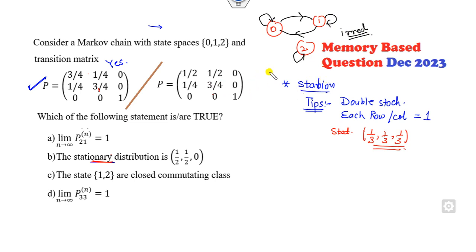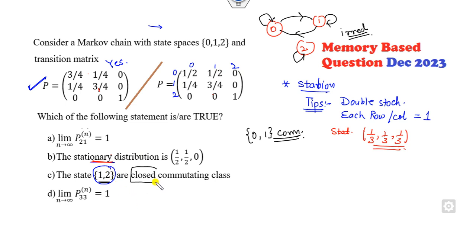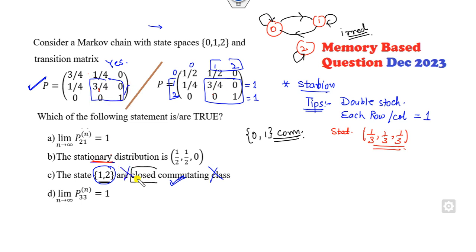Now, states 0 and 1 communicate with each other. Looking at this matrix with states 0, 1, 2 — how can you check whether states communicate? If you look at states 1 and 2, and check if the sum of each row is 1, then that option is correct. According to this analysis, some options are cancelled.